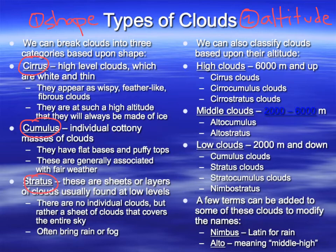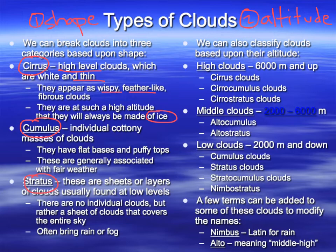You've seen all these cloud types before, so it's just a matter of recognizing them. Cirrus clouds are always high level — because they're so high up, the air is very thin, so these are always very thin, wispy, and feather-like. They're always going to be made of ice. In fact, the backdrop of this slide shows thin wispy clouds in the background — those are cirrus clouds.